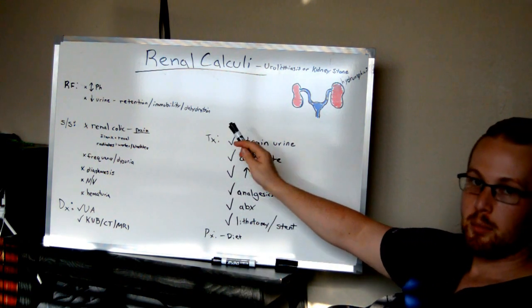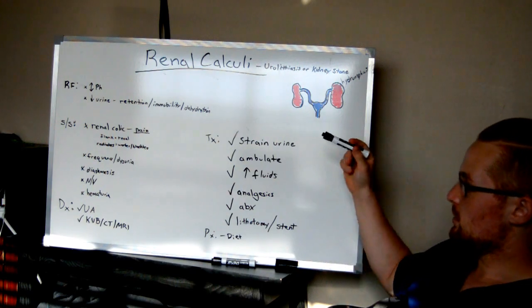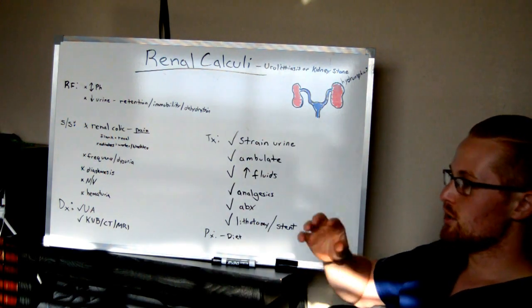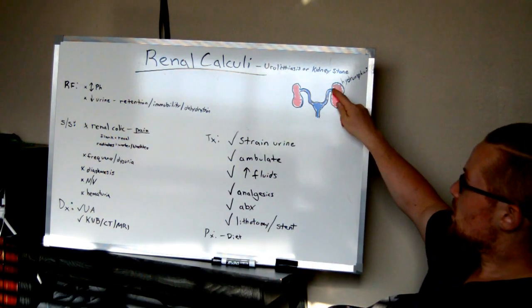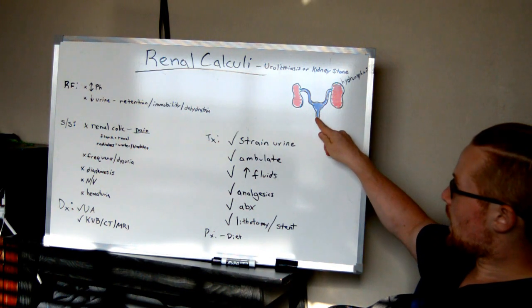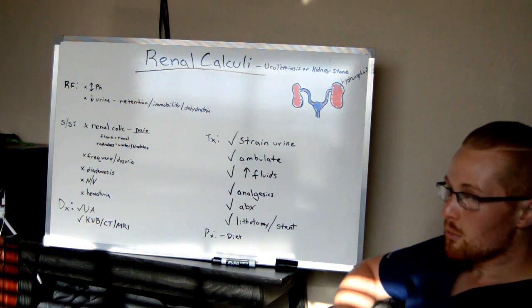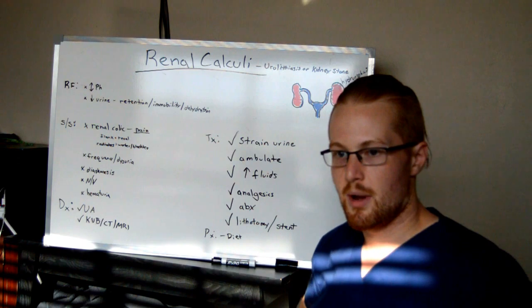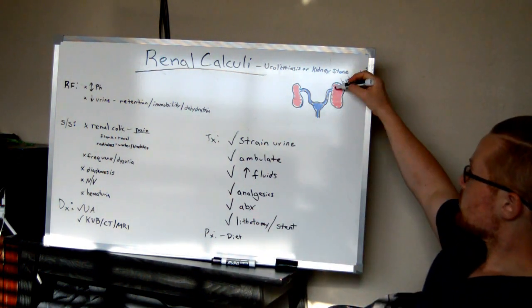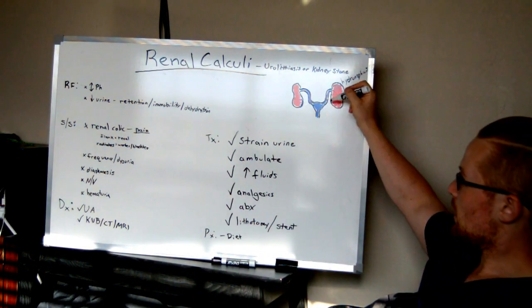They call it renal colic pain or colicky pain. When I say colic, it means it's there and then it's gone and it's moving, because the stone often is moving its way out of the system. If you feel it mostly in your flank, which is towards your back, then it's a sign that it's probably still up here towards the kidneys, okay?